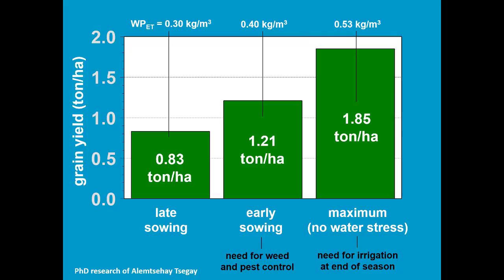So with early sowing and applying irrigation at the end of the season, the yield can be doubled. However, the new management strategies still have to be communicated to the farmers and geared to their possibilities.